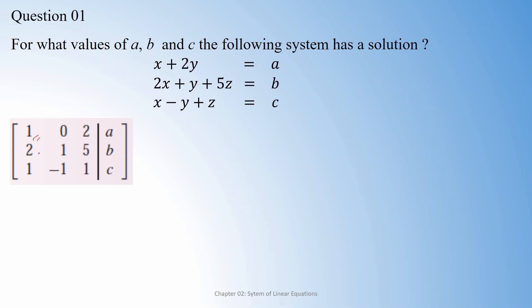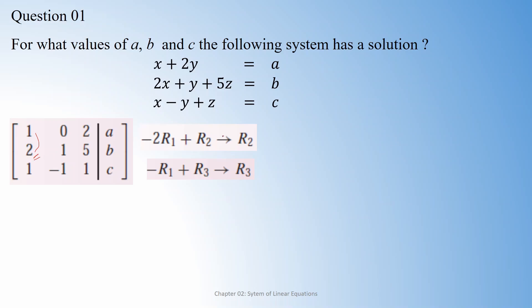This entry is already 1, so we have to make the entries below it equal to 0. For that purpose, we can use appropriate row operations. You can multiply the first row by minus 2 and add it into the second row to make that entry 0. Then multiply the first row by minus 1 and add it into the third row to make that entry 0.